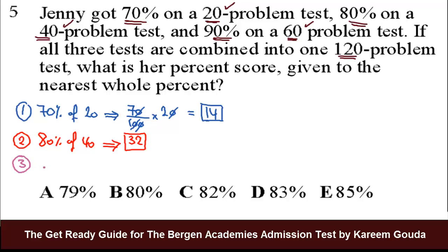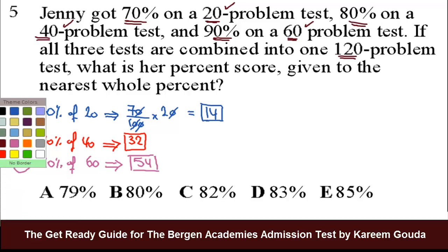Finally, on her third test, we know she got 90% of 60 questions. 90% of 10 is 9. So 90% of 60 is 9 times 6, which is 54. So she got, on the first test, 14 questions correct. On the second, she got 32. On the last, she got 54. Now, add them together, 14 plus 32 plus 54. 14 plus 32, we have 46. 46 plus 54, we have 100. So she got 100 questions correct.